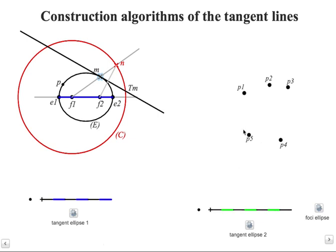If the ellipse is defined by these five points, here is the ellipse. Point is given here. We use the macro foci ellipse, which will be created in the next page, allowing us to construct the foci of the ellipse.